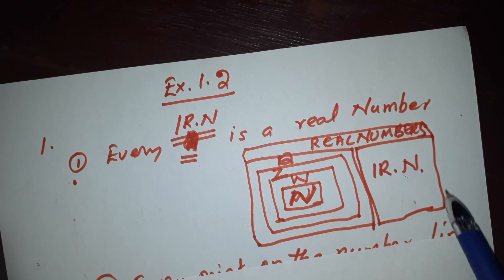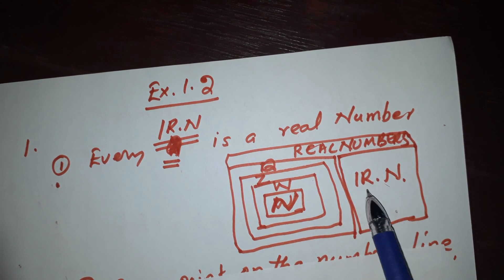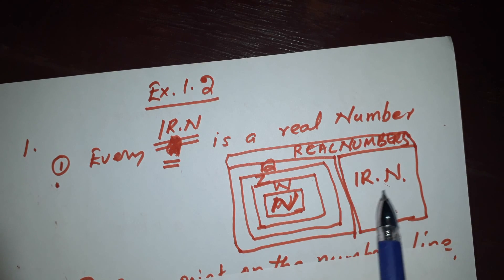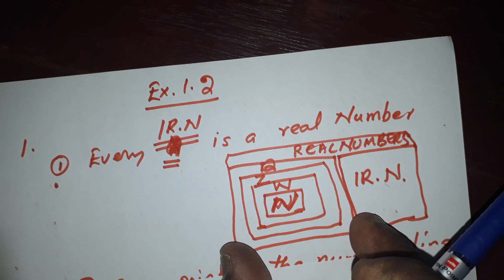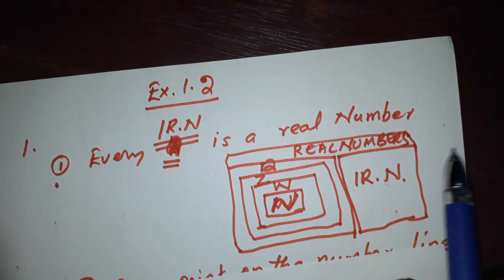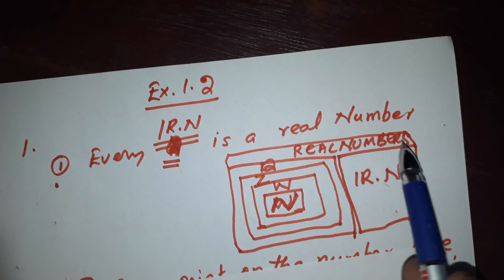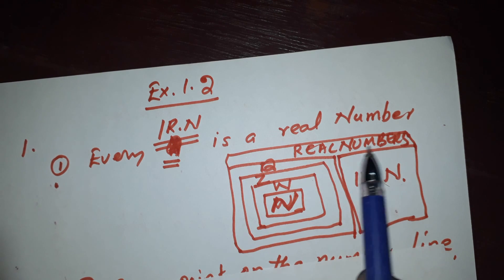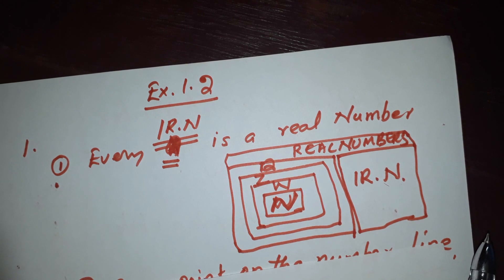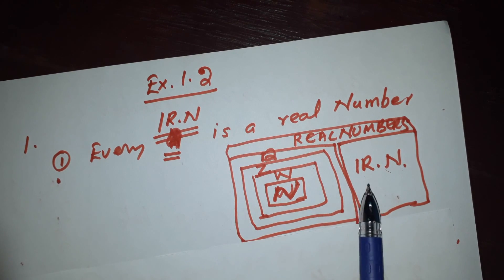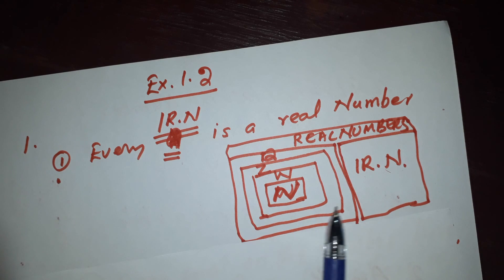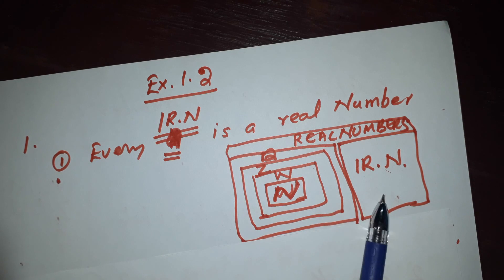One thing is irrational number. If we put a number under the root, it is an irrational number. Rational number, irrational number — we also call them real numbers.